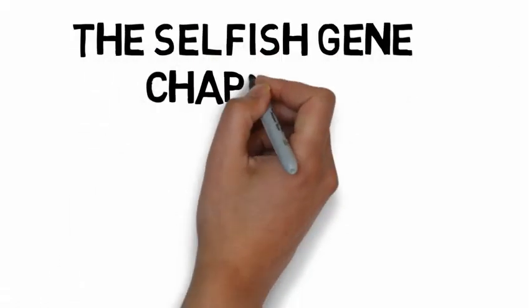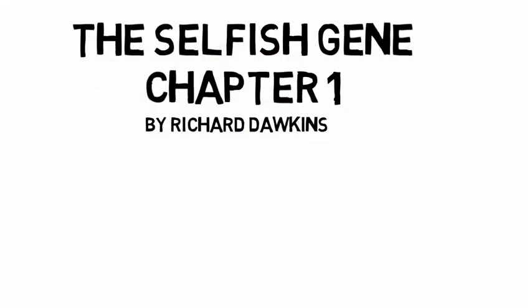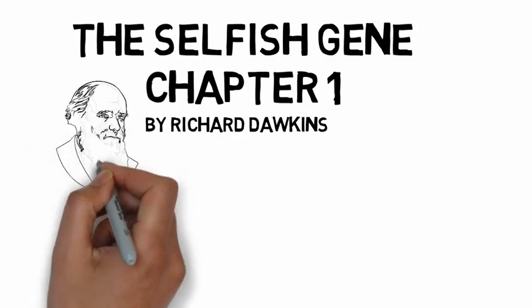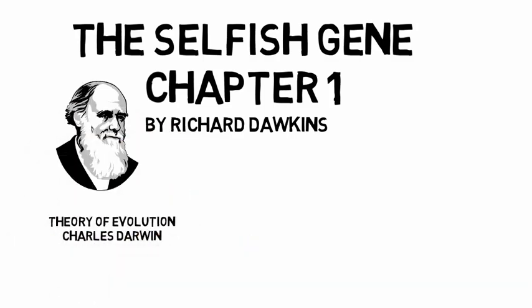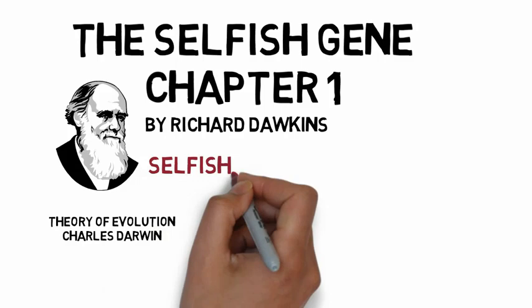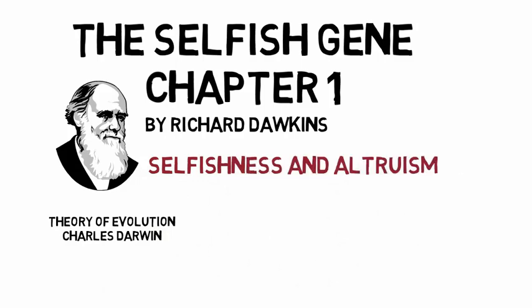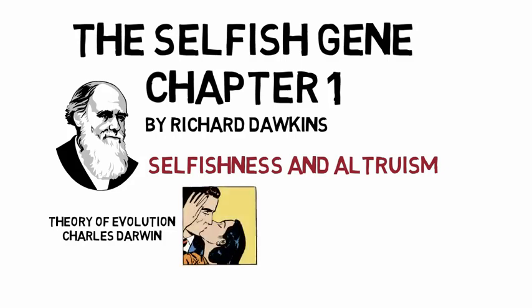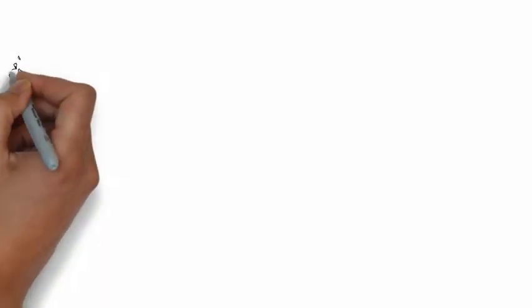The Selfish Gene, chapter 1 by Richard Dawkins. The Selfish Gene is an exploration into the consequences of the theory of evolution by Charles Darwin, especially the biology of selfishness and altruism. The theory of evolution is important to our social lives because it extends to love-hate, fighting and cooperation, giving and stealing, and greed and generosity.